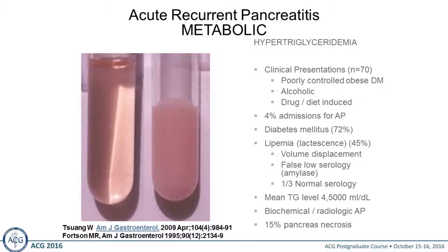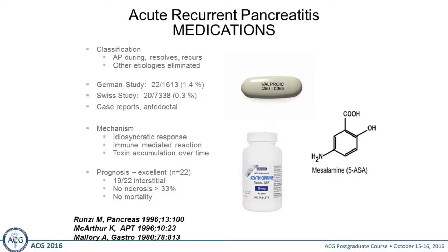In regard to metabolic conditions, hypertriglyceridemia — usually if the triglyceride level is over 1,000 — will predispose you to recurrent attacks of acute pancreatitis. Between 500 and 1,000 is a gray zone. Most of these patients have metabolic syndrome and often have diabetes. If you don't get the diabetes under control, you'll never control their hyperlipidemia and recurrent pancreatitis. Weight loss, diabetic management, and lipid-lowering medications all help decrease recurrent attacks.